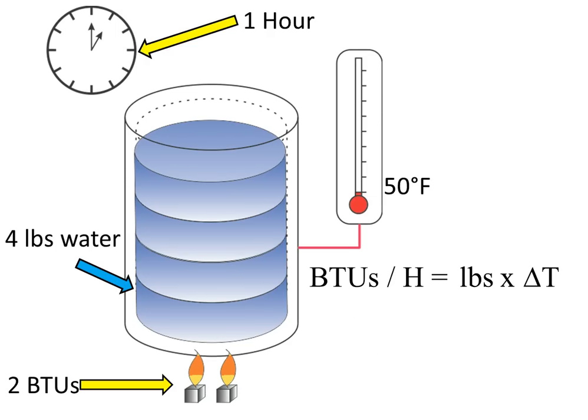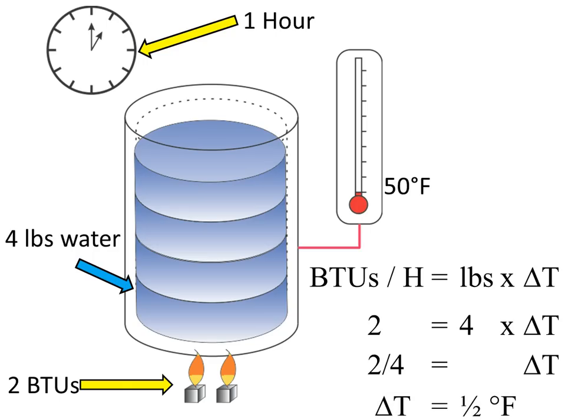One more time, we double the amount of heat and the amount of water: 2 BTUs applied to 4 pounds of water. Initially, the water temperature is at 50 degrees Fahrenheit. During 1 hour, how many degrees will the water temperature increase? Substituting the numbers in the formula: 2 BTUs per hour equals 4 pounds of water multiplied by delta T. Dividing both sides by 4, delta T equals 2 over 4, or half a degree Fahrenheit. The water temperature will increase from 50 to 50 and a half degrees Fahrenheit.